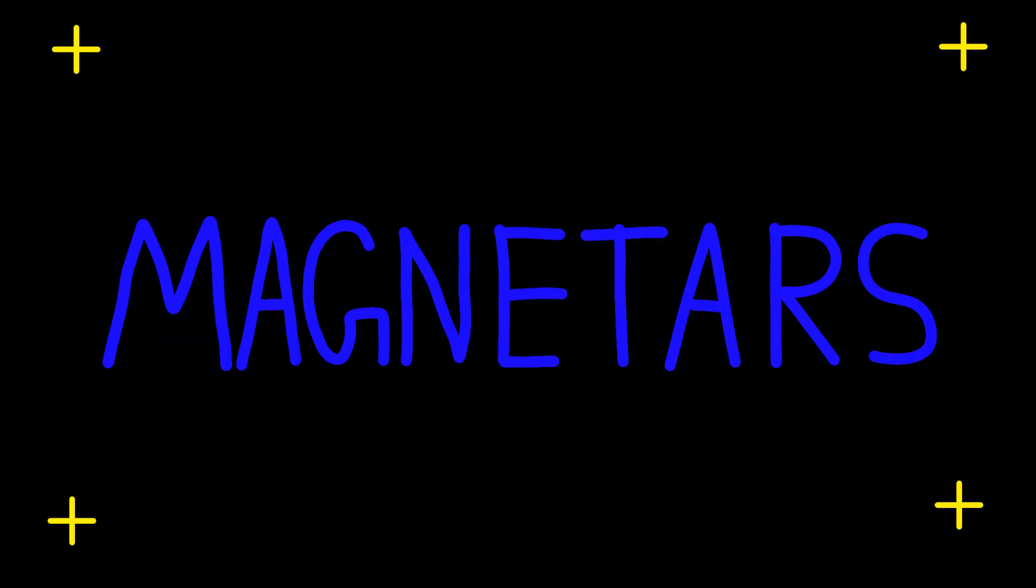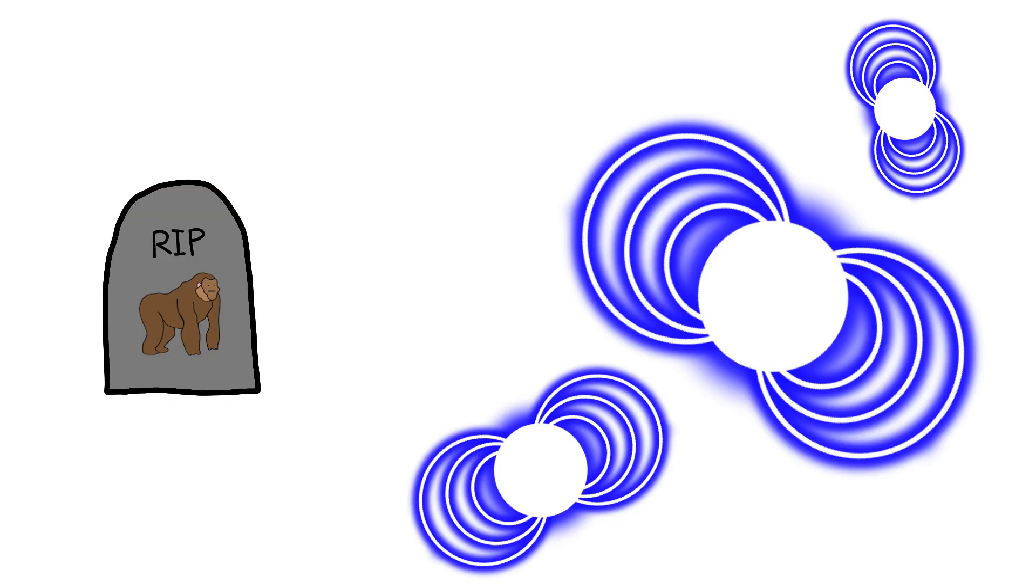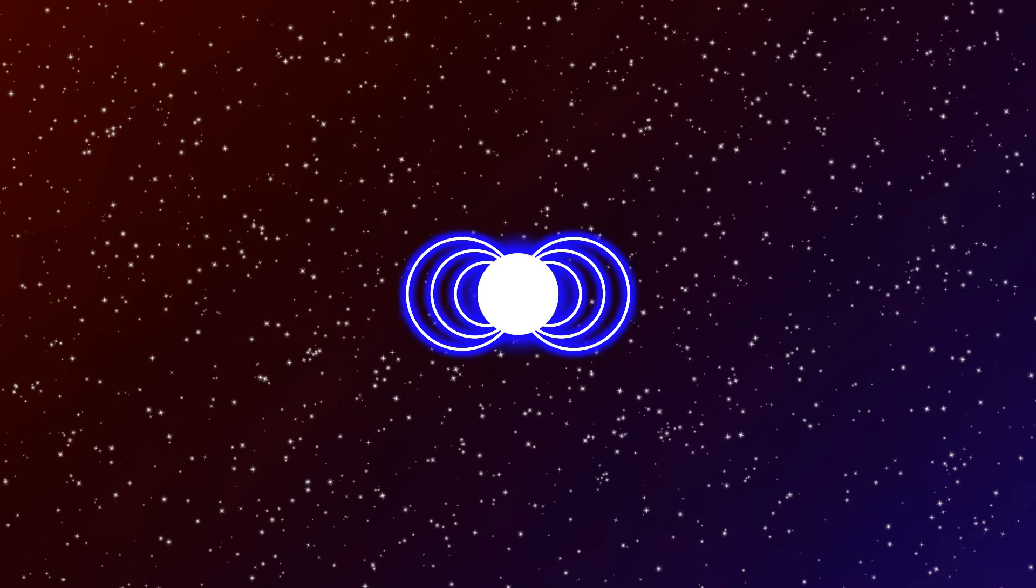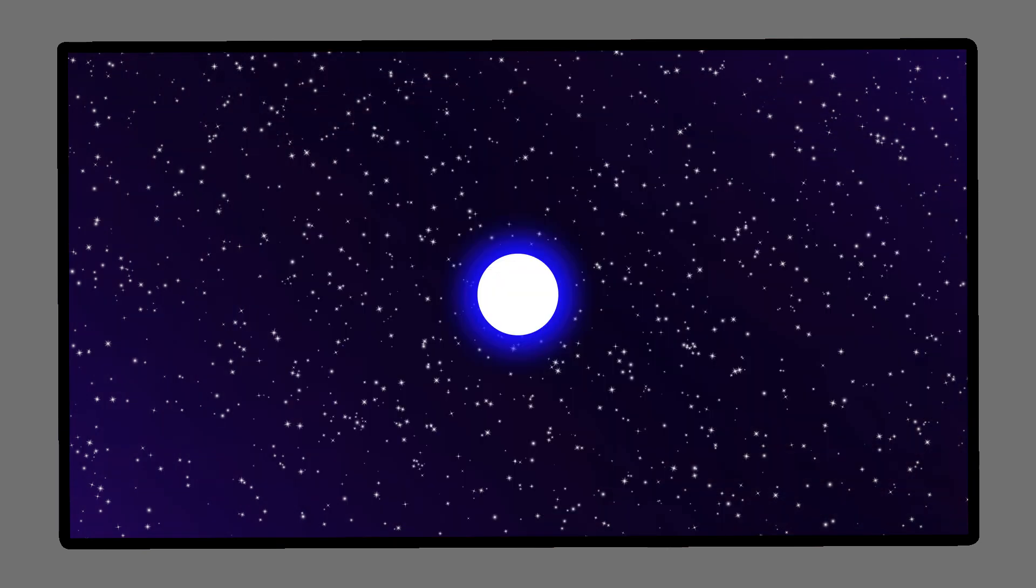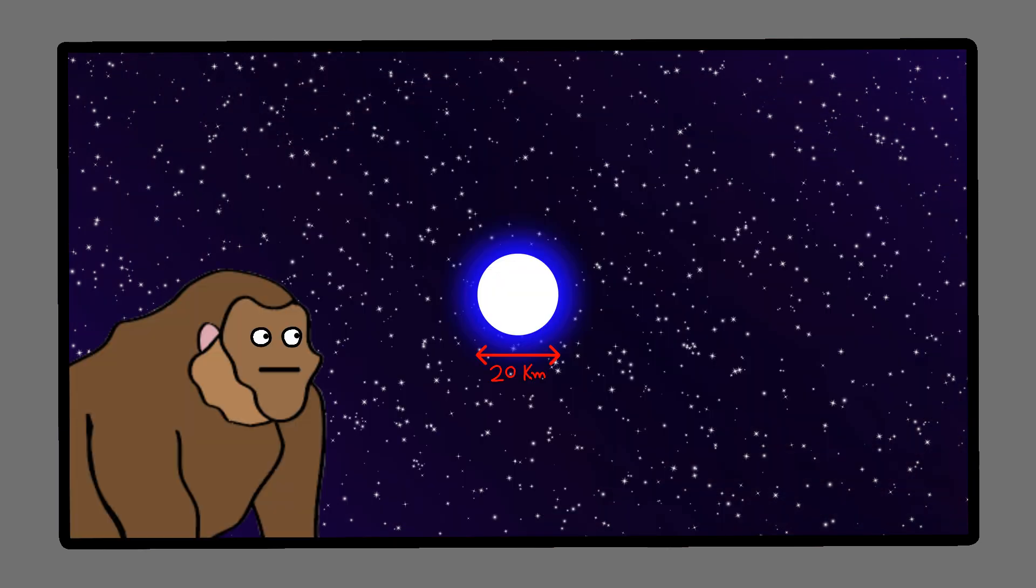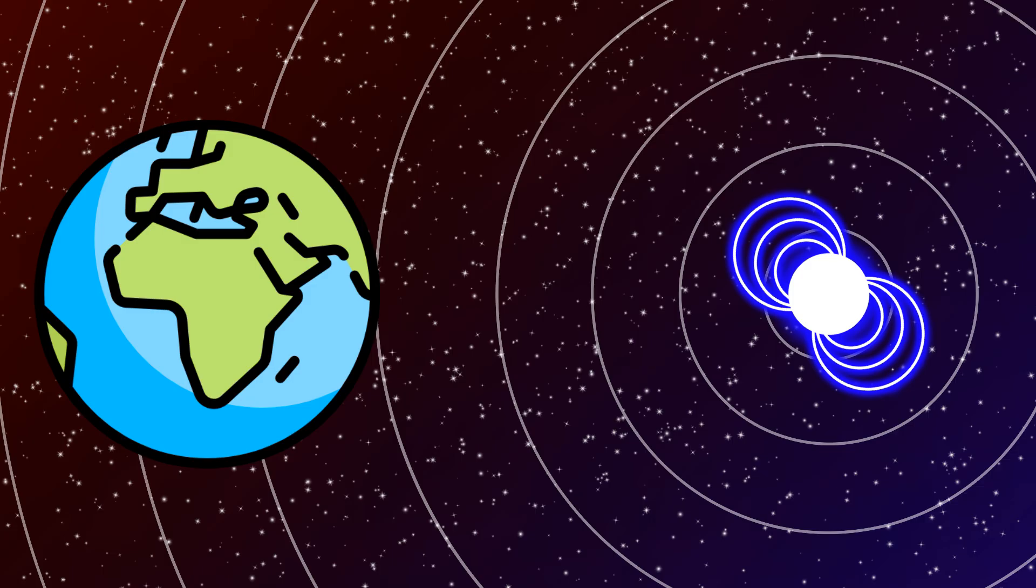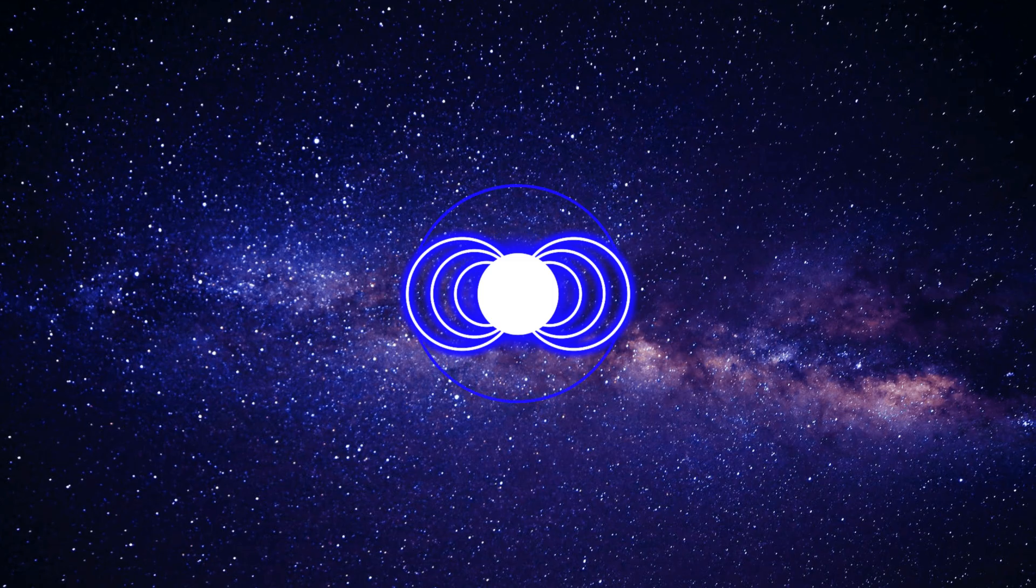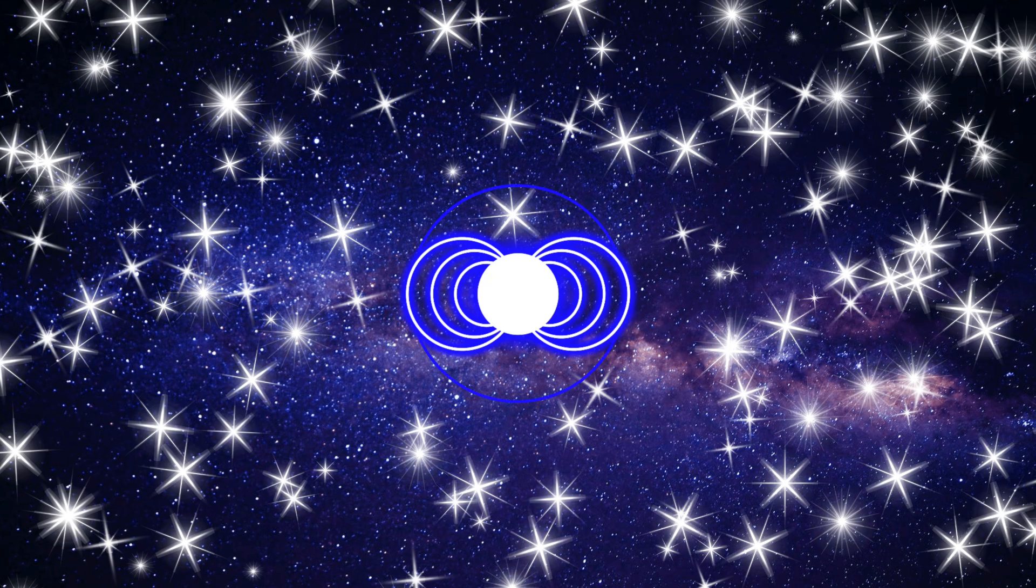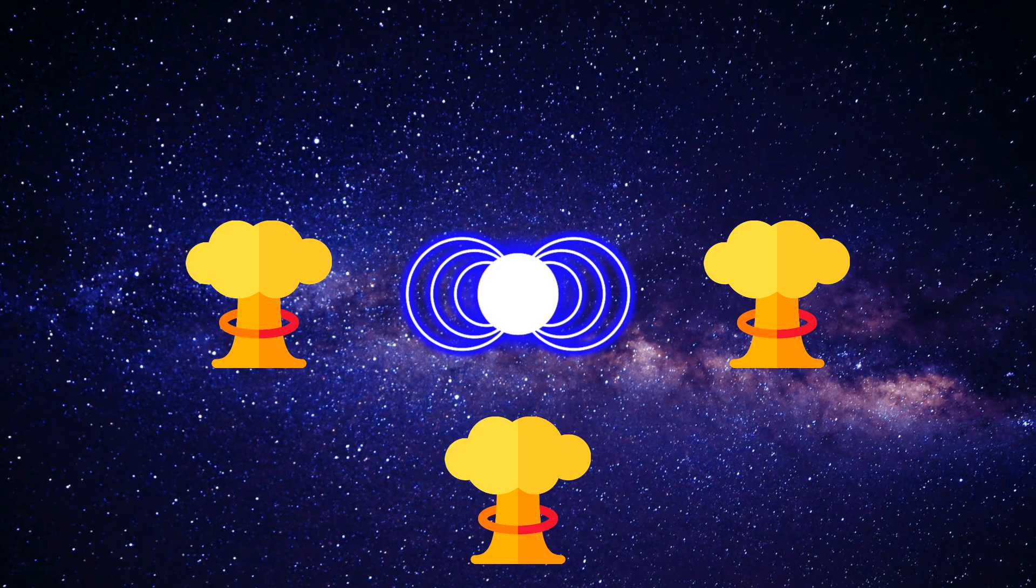Just when monkey thought the universe couldn't get more dangerous, monkey discovers magnetars: neutron stars with magnetic fields so powerful they break the laws of physics and monkey's understanding of reality. Picture a star more massive than the Sun collapsed into a sphere only 20 kilometers across. Already terrifying, right? Now give it a magnetic field a quadrillion times stronger than Earth's, so strong that if a magnetar were located as far as the Moon, it could wipe every credit card on Earth and distort atomic structure itself. These magnetic monsters don't just sit quietly in space. Their magnetic fields twist and fracture the star's crust, occasionally releasing massive bursts of x-rays and gamma rays that make nuclear bombs look like fireflies.